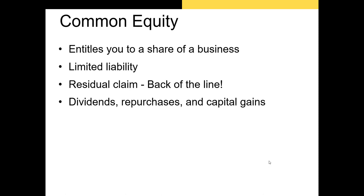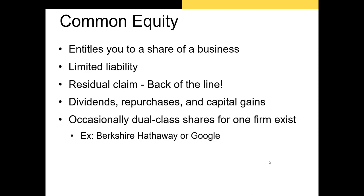Stock can also entitle an investor to dividends and capital gains. Nowadays, firms are also repurchasing their own stock from investors — if the firm has excess cash, it'll use it to buy shares on the open market and may cancel those shares, reducing the total shares outstanding. Not every firm pays dividends or repurchases shares; in fact, the number of firms paying dividends is shrinking, and more are electing to repurchase shares. It's also possible for one firm to have different classes of common stock outstanding at the same time.